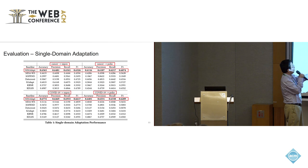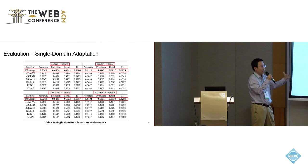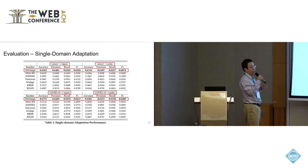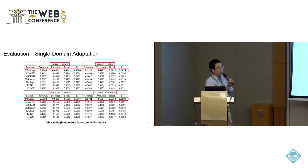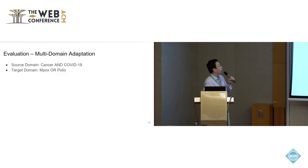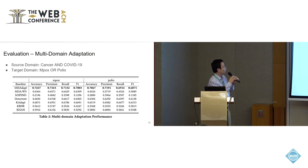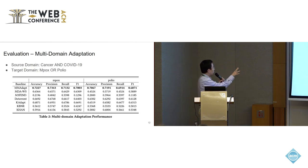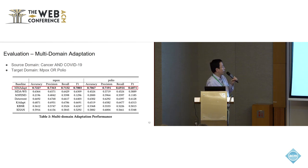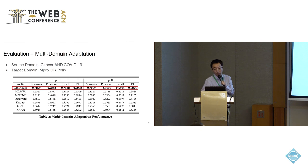We first evaluated single-domain adaptation across four combinations of source and target demands. Our MMAdapt approach outperforms other state-of-the-art misinformation detection baselines. We also observed that selecting different source demands yields different performance, likely due to the discrepancy between source and target domains. Most encouragingly, when combining multiple source demands together, we see a clear performance improvement — confirming that leveraging knowledge from multiple source demands works on real-world data.